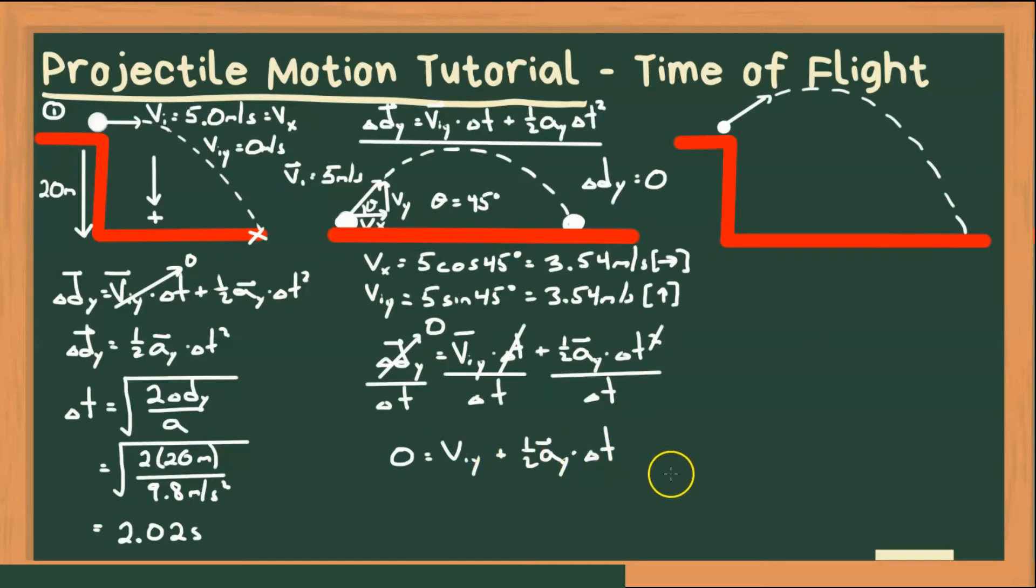So now I can rearrange this all for time. If I do that, I bring Vy to the other side of the equation. So that leaves me with one half Ay times time is equal to negative Vy. Multiplying by 2 and dividing by a gives us time as negative 2 Vy all divided by Ay.